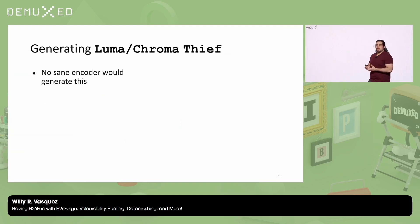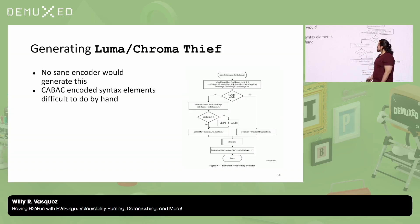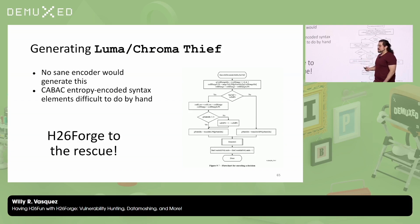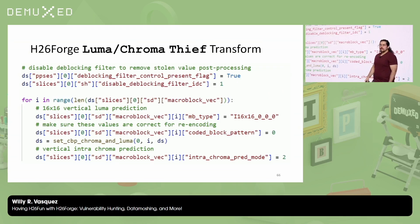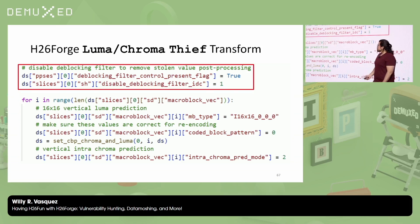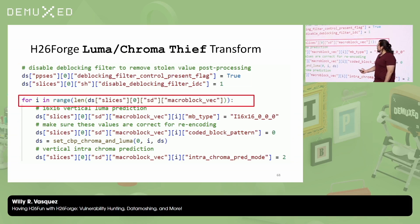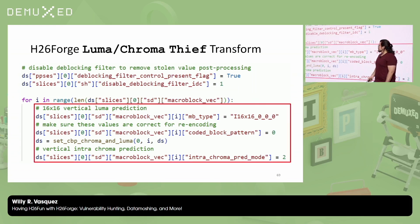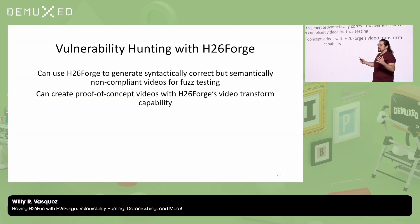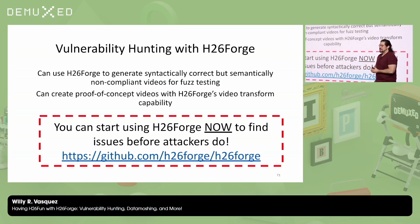How can we actually generate this video with vertical or leftmost intra-prediction? No sane encoder would ever generate this, and if you wanted to do it by hand, good luck working through the CABAC-encoded syntax elements. This is where H26Forge comes to the rescue. Here is the Python script we use to take an input video, modify the syntax elements, and get Luma Chroma Thief. First, we disable the deblocking filter to remove stolen values. Then for every macroblock inside a slice, we set it to vertical Luma and Chroma prediction. This summarizes vulnerability hunting with H26Forge — you can generate videos with out-of-bounds syntax elements and find issues in your own products before attackers do.